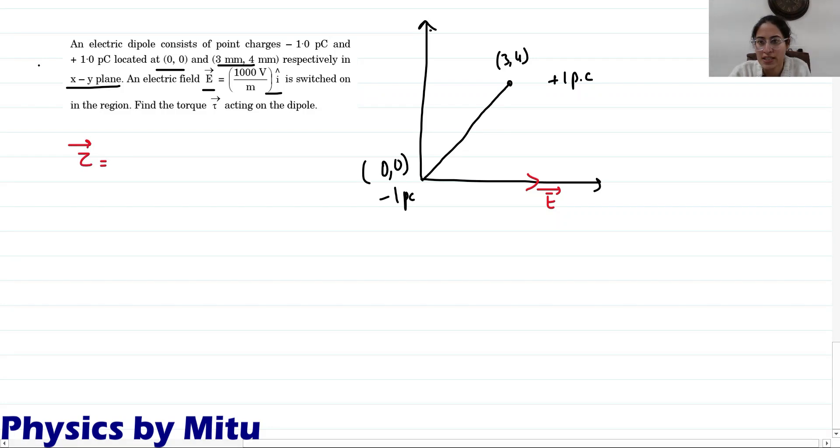What formula is torque? It is P cross E. If we write the magnitude, torque is P E sin theta. P is Q into 2A into electric field into sin theta.